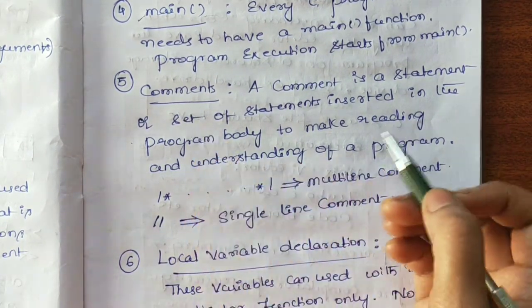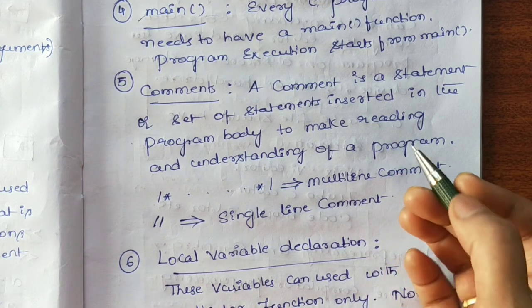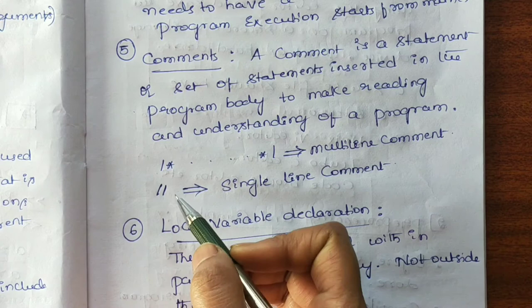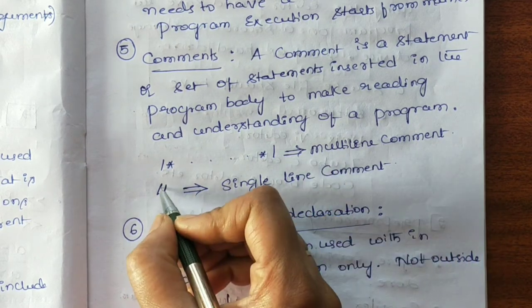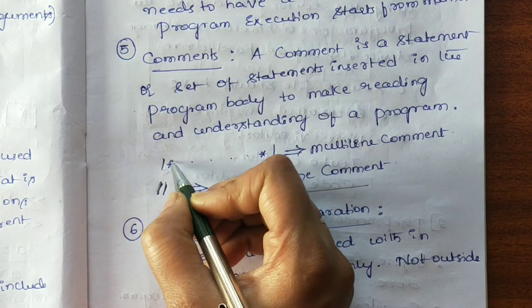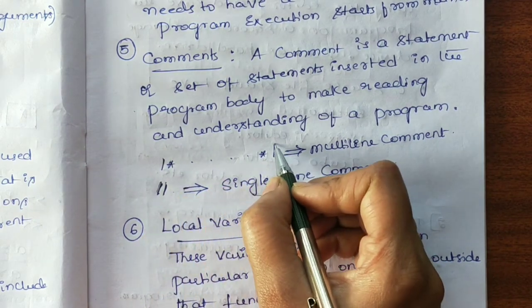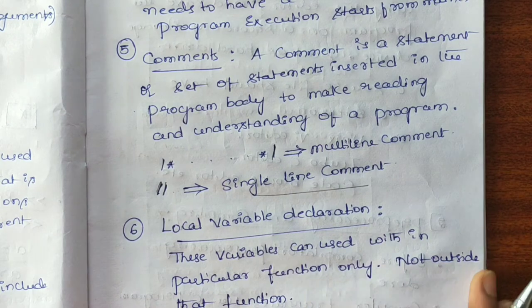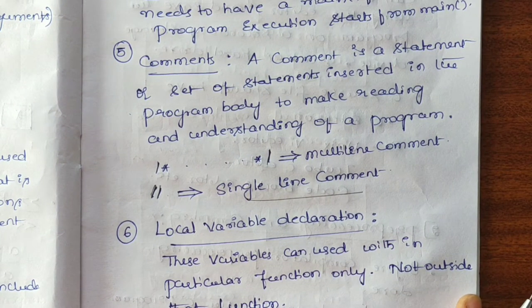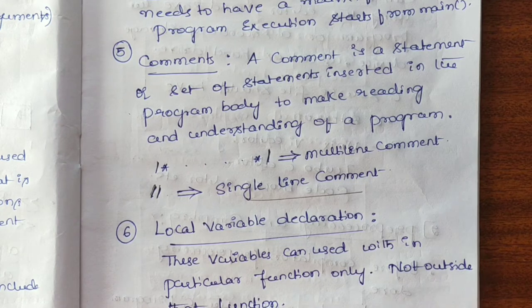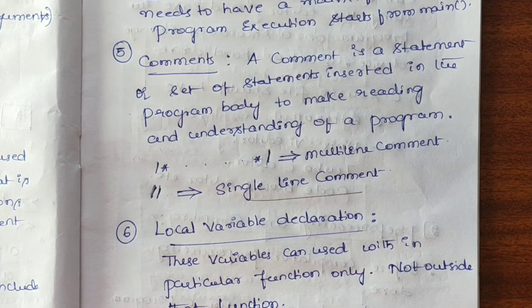The next part is comments. A comment is just for our understandability or for user understandability. We can use a single-line comment or a multiline comment. A single-line comment uses two forward slashes — anything written after // is a single-line comment. A multiline comment uses /* then */. Inside this, we can write comments in many lines. These single-line and multiline comments are mainly used for program understandability. Suppose if we declare the variable a, we can say this variable a is used for such and such purpose.